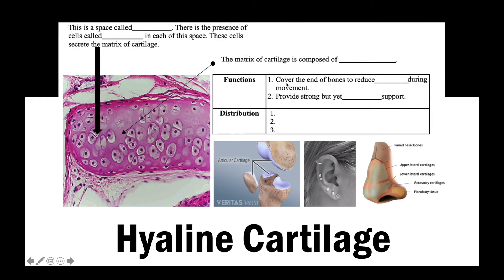Hyaline cartilage covers the ends of bones to reduce friction during movement and provides strong but flexible support. It can be found in the nose, ears, and at the ends of long bones. The matrix of cartilage is composed of a substance called chondroitin sulfate, secreted by cells known as chondrocytes, which live in spaces in the matrix called lacunae.